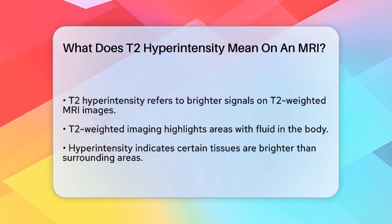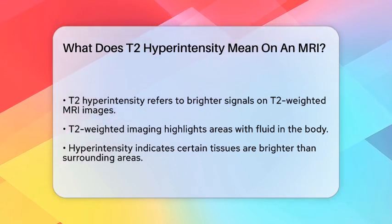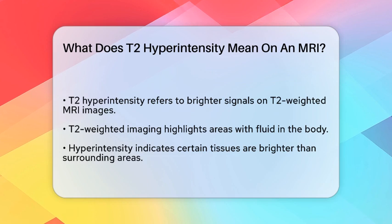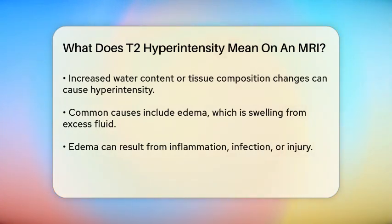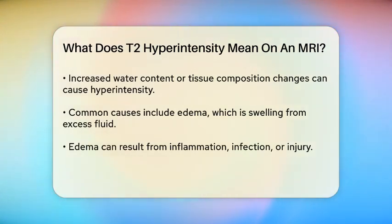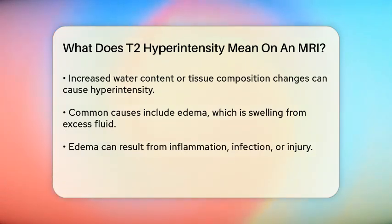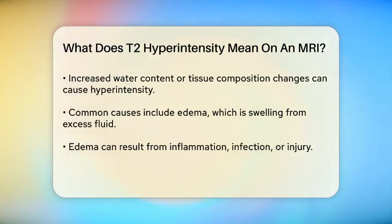When we talk about T2 hyperintensity on an MRI, we are referring to a specific type of signal that appears brighter on T2 weighted images. T2 weighted imaging is a technique that highlights areas of fluid in the body. In this context, hyperintensity means that certain tissues or areas appear brighter than the surrounding tissues. This can be due to an increase in water content or changes in the tissue's composition.